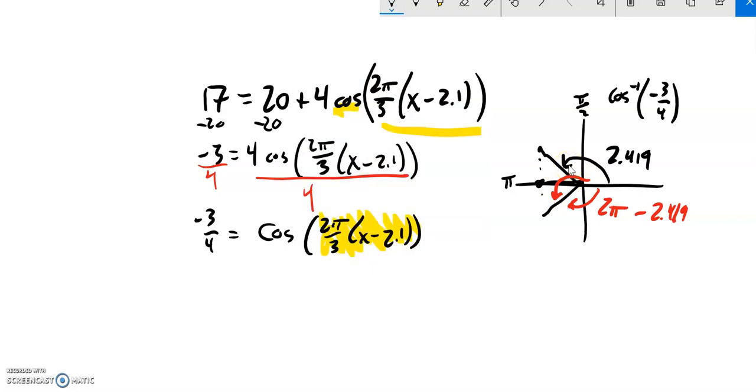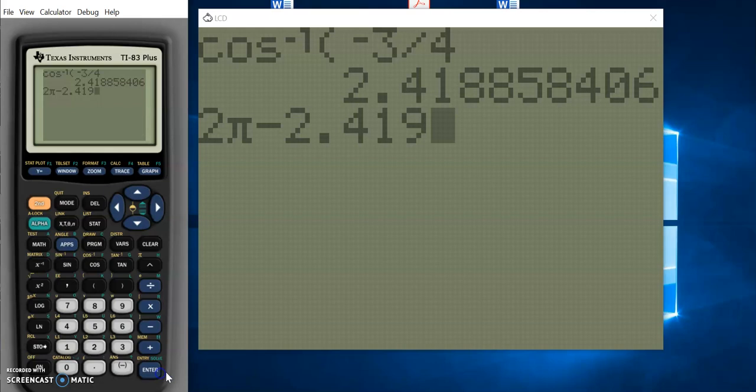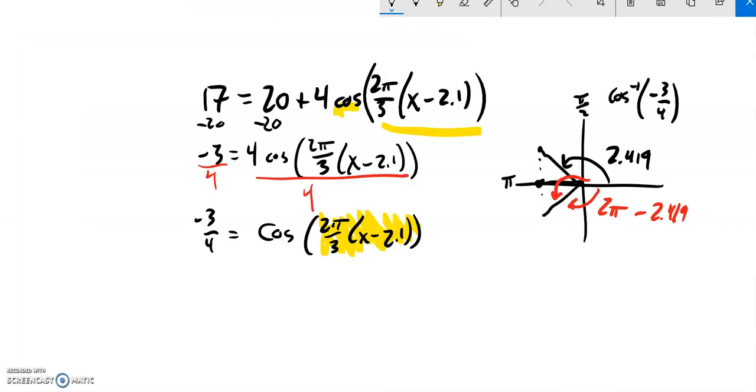And I'm just going to do that on my calculator. 2π minus that 2.419, I get about 3.864.